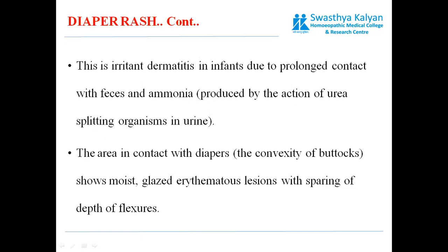This is also called irritant dermatitis in infants, due to prolonged contact with feces and ammonia produced by the action of urea-splitting organisms in the urine. The area in contact with the diaper — that is, the convexity of the buttocks — shows moist, glazed erythematous lesions with sparing of the depth of the flexures.